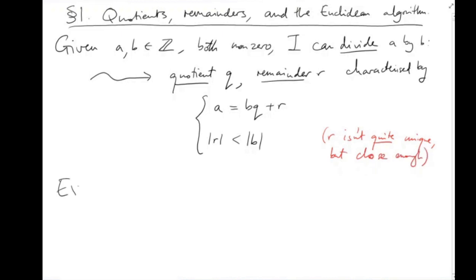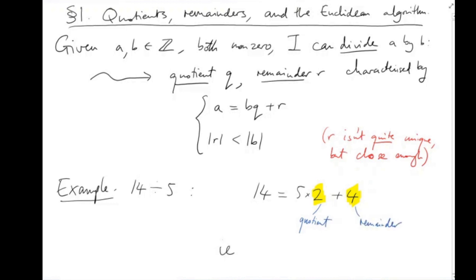Here's an example. If we divide 14 by 5, we get a quotient of 2 with a remainder of 4.